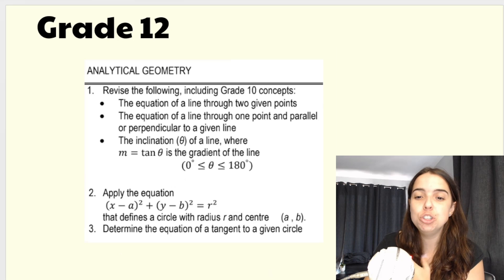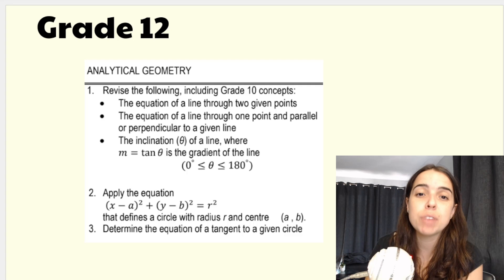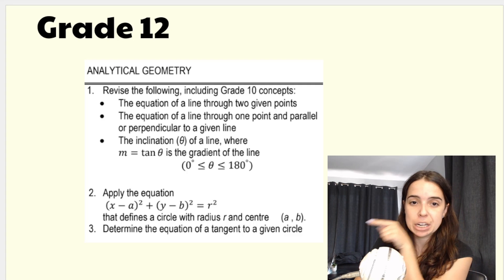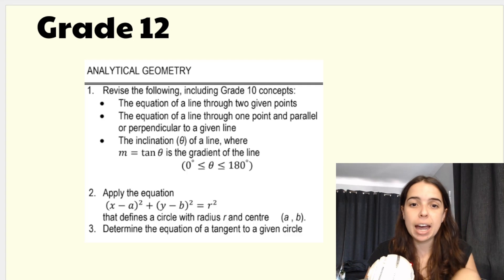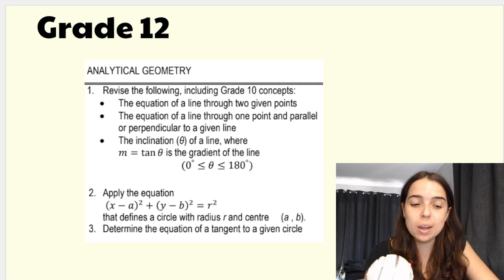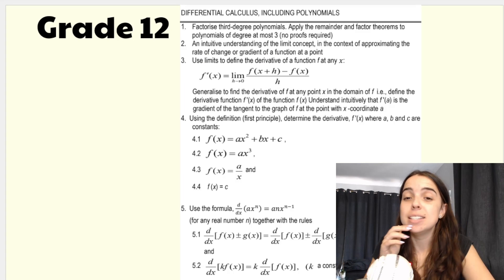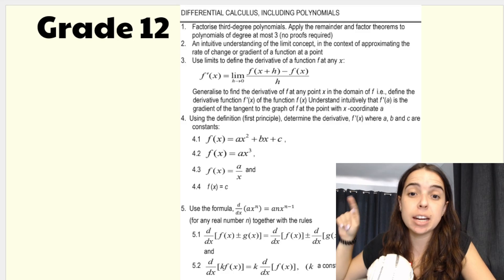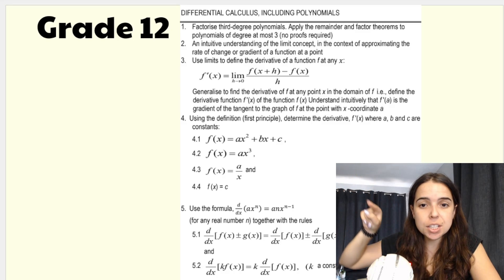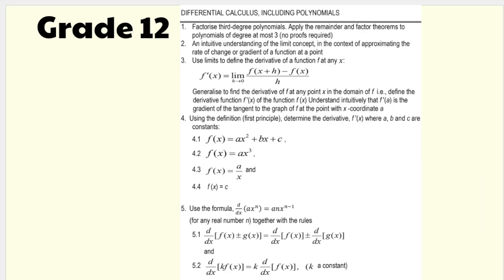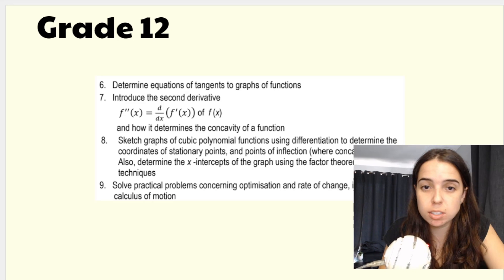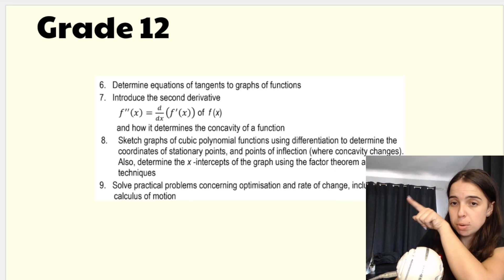After Euclidean geometry, you will be doing analytical geometry — again, revision of everything done from grade 10 through grade 11, but in addition you'll be applying a new equation and determining the tangent to a given circle. Then last but definitely not least — and this can be quite overwhelming because it is a new section — is differential calculus, which includes polynomials. You can see the full list of everything you'll be doing in this section, and you'll also be using it to sketch graphs and solve practical problems.